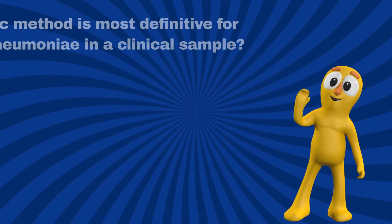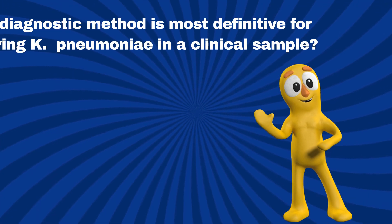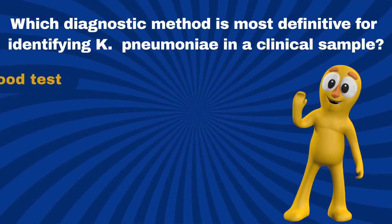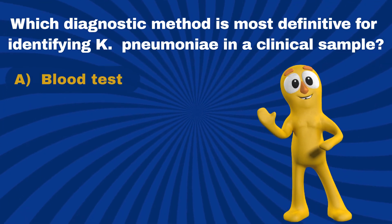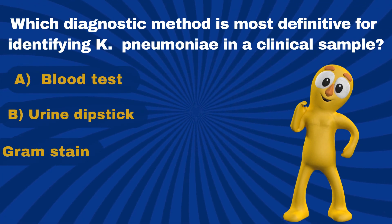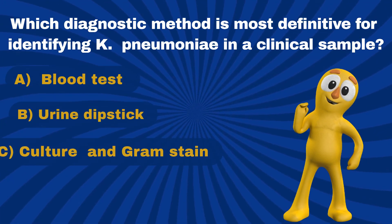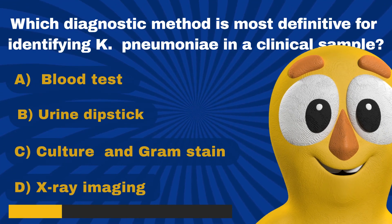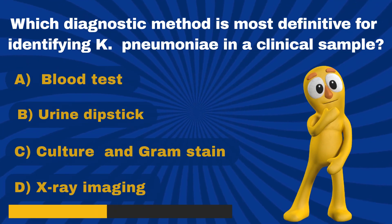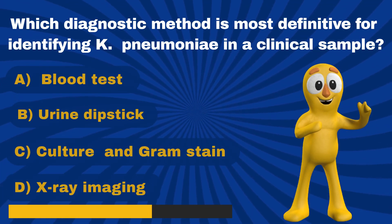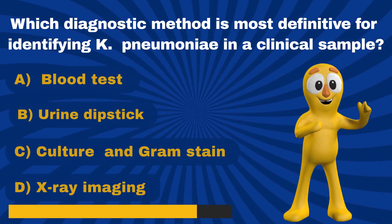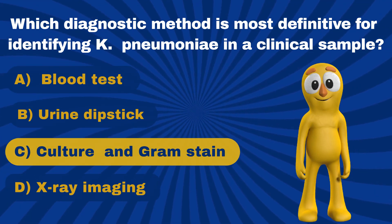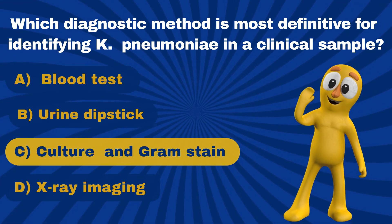Question 10. Which diagnostic method is most definitive for identifying Klebsiella pneumoniae in a clinical sample? A. Blood test. B. Urine dipstick. C. Culture isolation and gram stain. D. X-ray imaging. Correct. It is C — Culture isolation and gram stain.